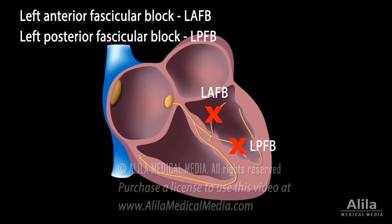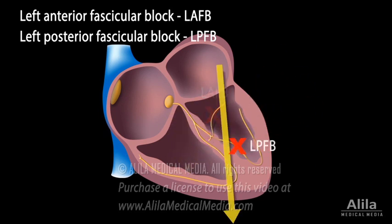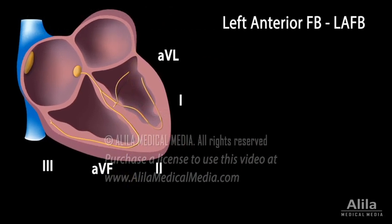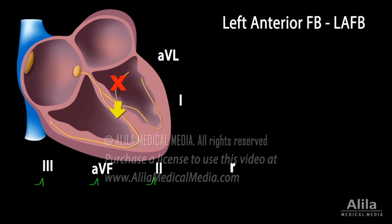The hallmark of LAFB and LPFB is a deviation in the cardiac axis. In LAFB, the anterior branch is blocked, and the posterior fascicle must activate the entire left ventricle. At first, the impulses follow the posterior fascicle downward toward the inferior leads, resulting in a small positive deflection, small R-wave, in these leads.